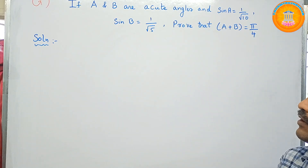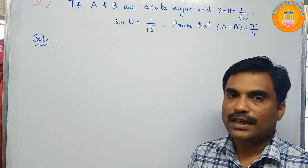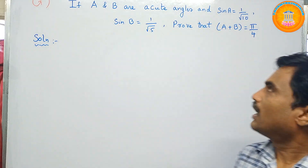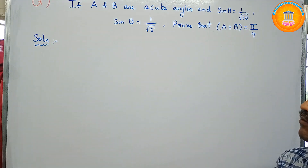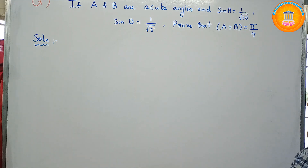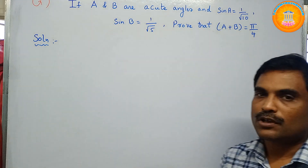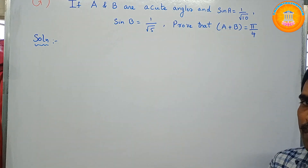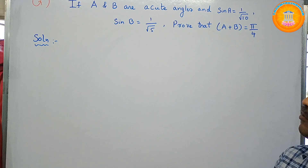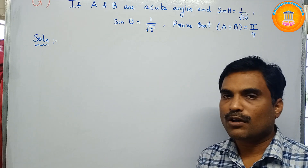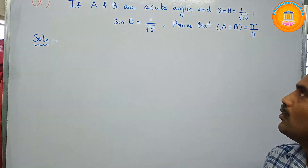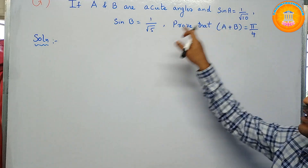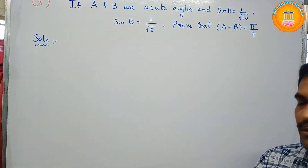So what is given in the problem: two angles A and B, with sin A = 1/√10 and sin B = 1/√5. We need to prove that A + B = π/4. To prove this, we need to use the trigonometric formula for sin(A + B). Before applying that, we need to find the values of cos A and cos B.